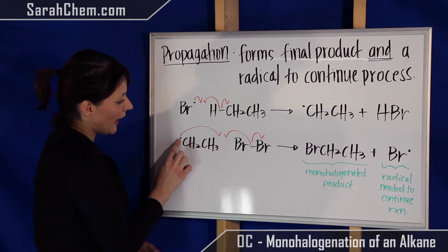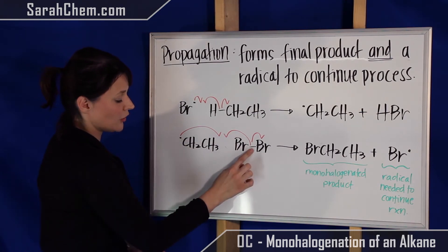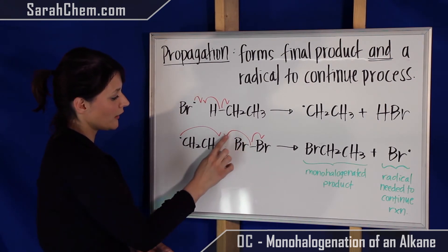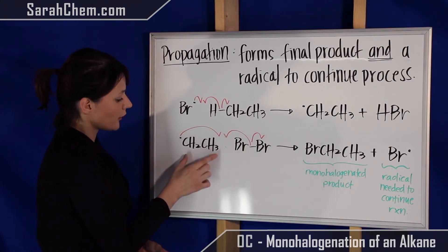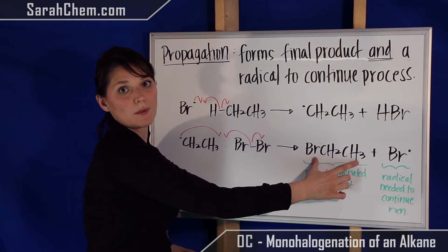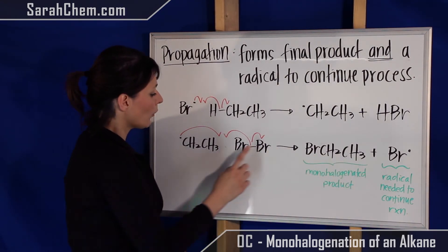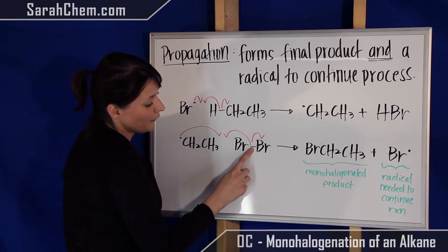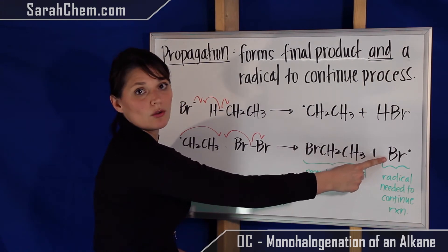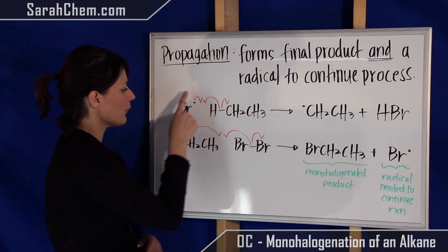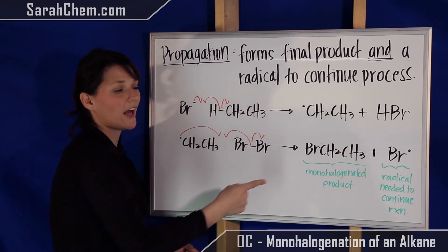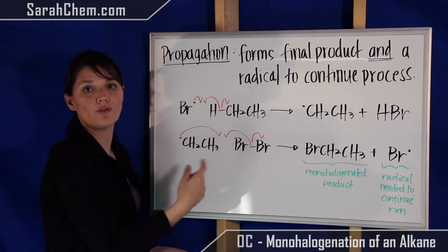And then this is going to react once again with a homolytic cleavage with a bromine from a Br2 molecule. So this bromine will take one electron, join up with the one electron on the ethane radical, and here we get out the monohalogenated ethane product that we wanted. We will also see that then, the other bromine that was part of that bond will have an electron dumped on it, so here we've created the radical. This radical is then the same radical used in the very first step of propagation, and then this reaction can keep happening over and over and over again.